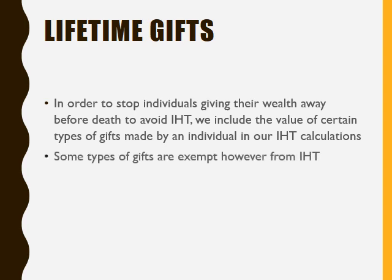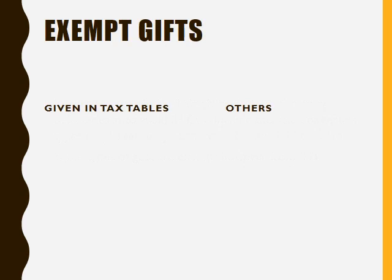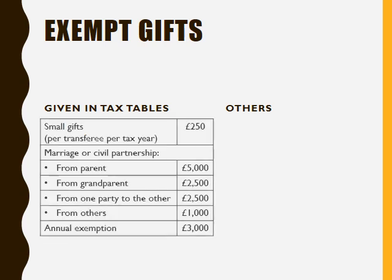There are types of gifts where we don't have to take them into account when calculating inheritance tax — these are exempt. Some of them are given in the tax tables. For instance, if an individual gives gifts to friends and relatives of up to £250 each per tax year, these are classed as small gifts and we don't have to take them into account.